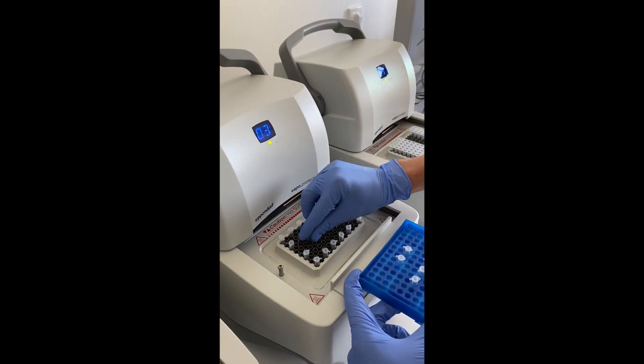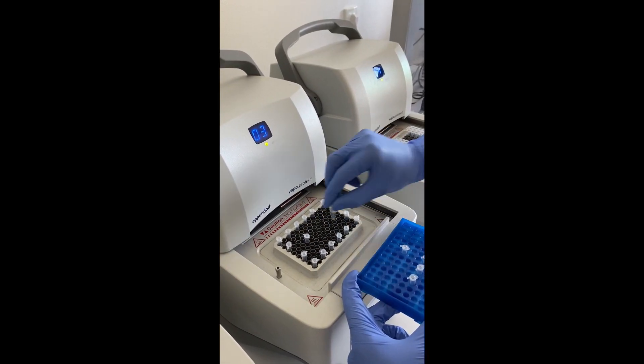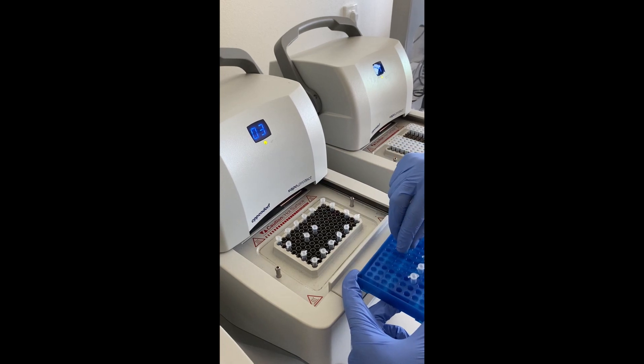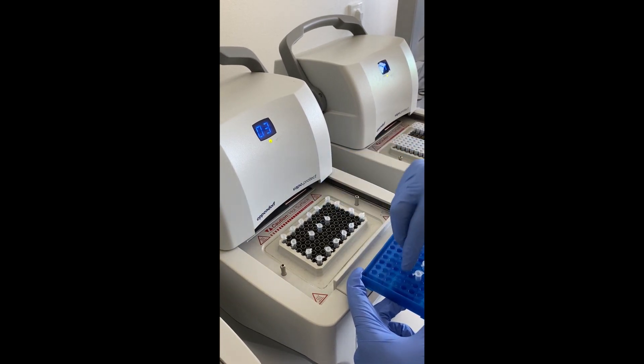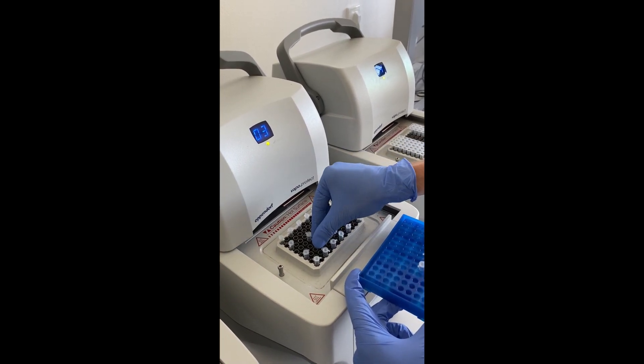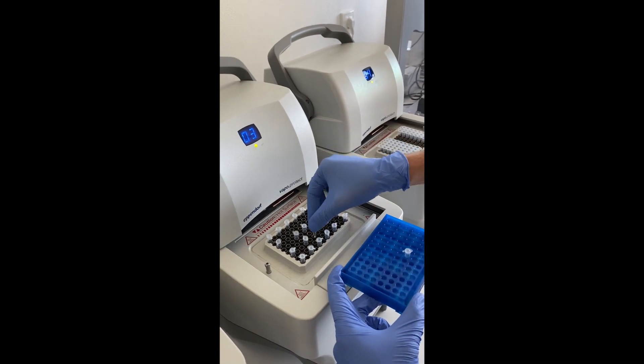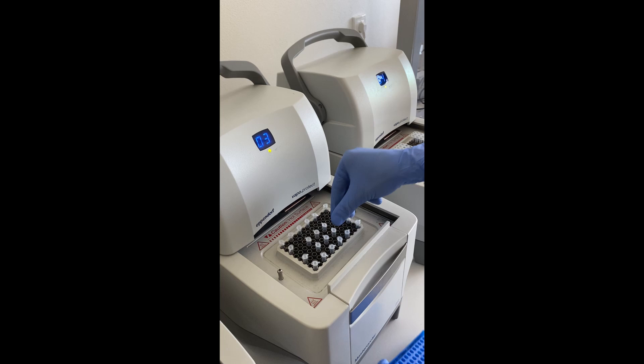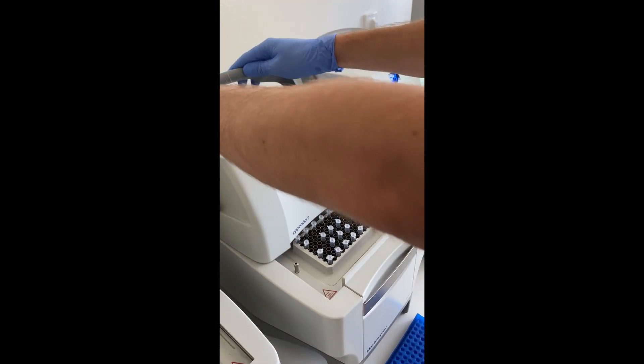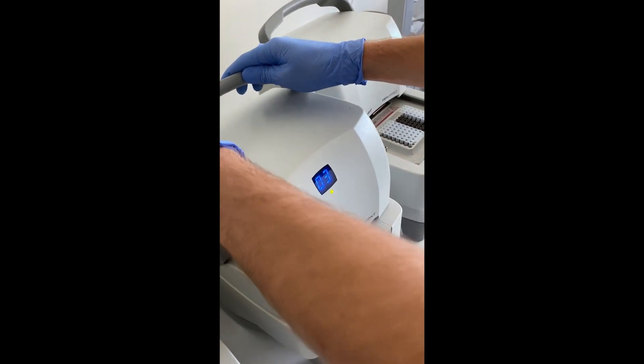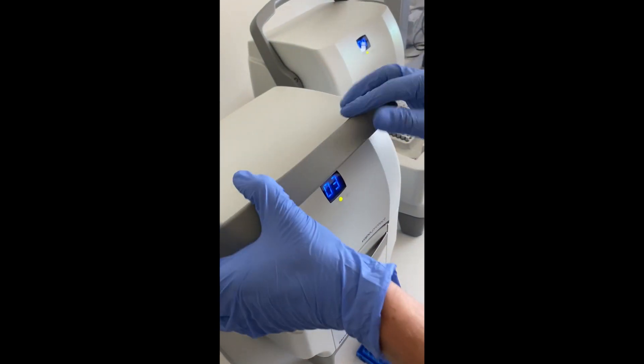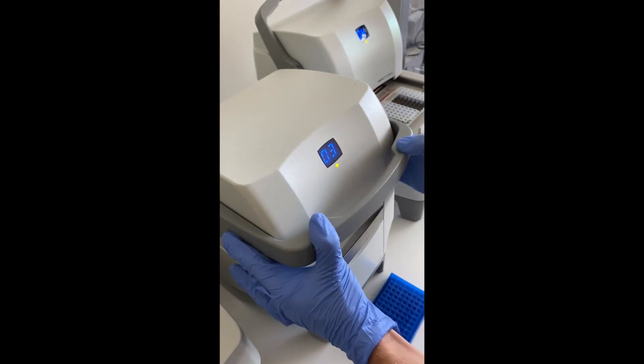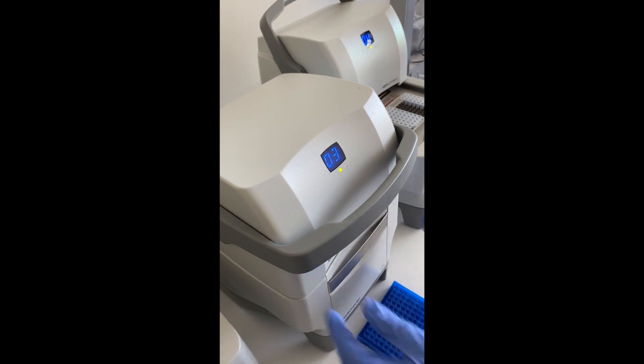A PCR cycler is a device that is used in the laboratory for amplification, which is multiplication of DNA sequences by means of the polymerase chain reaction. The PCR cycler ensures the alteration of temperatures required for the individual phases of the PCR reaction. It is possible to set the required temperatures of the individual phases as well as the number of cycles of the PCR reaction as required.